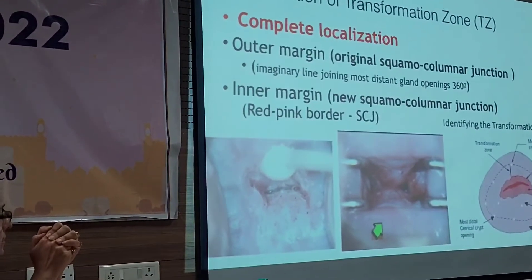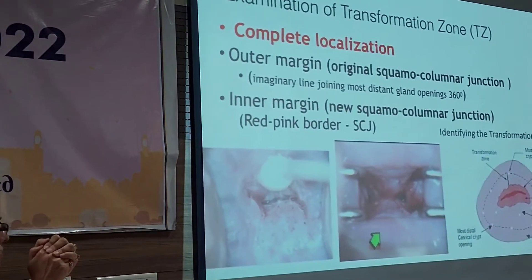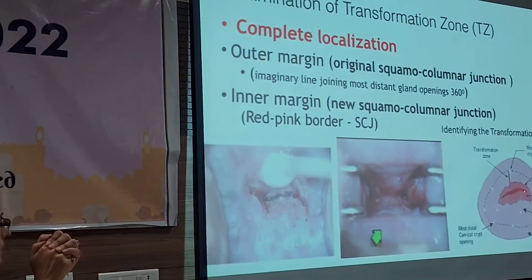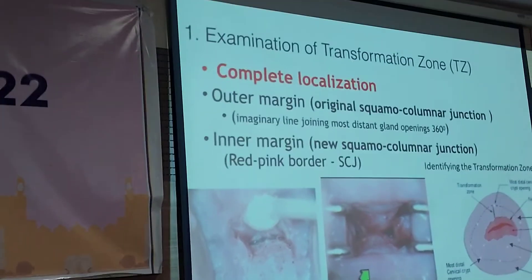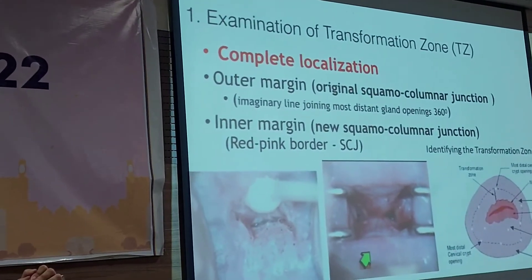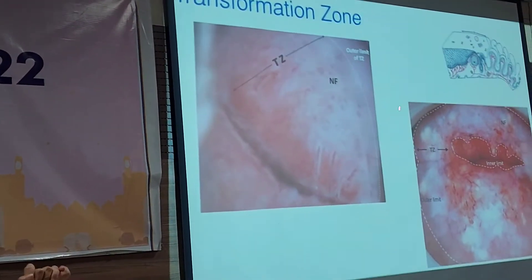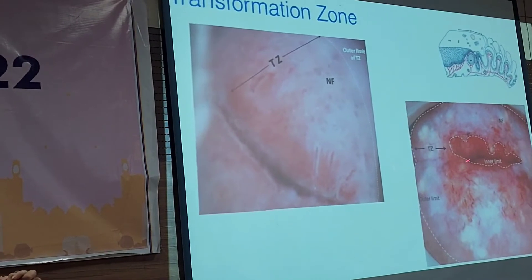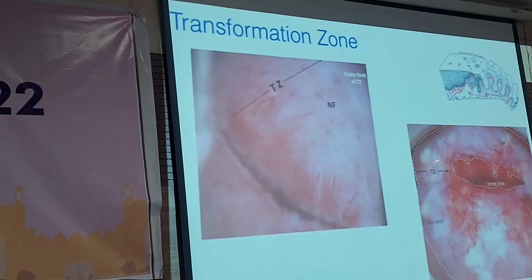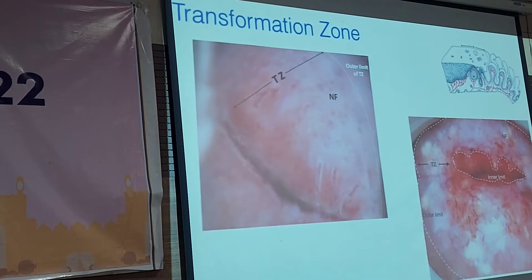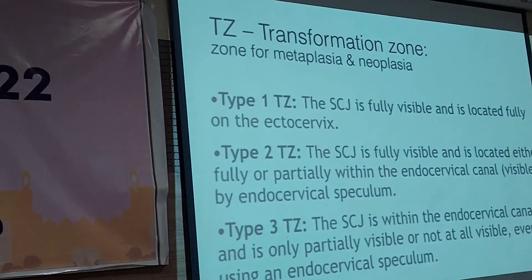The entire transformation zone, all 360 degrees, should be visible for a colposcopy to be considered adequate. While we can move the cervix to see the outer margin all around, if you are not able to see the inner squamocolumnar junction completely, you may miss important findings. The inner and outer limits of the transformation zone must both be identified and documented.